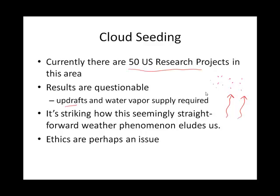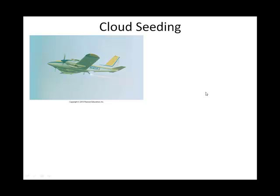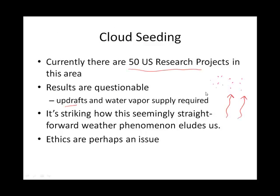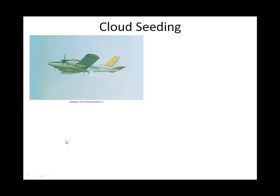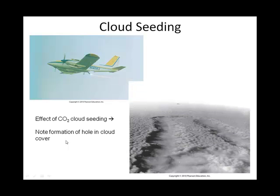Another concern about making it rain here and not there is that there might be some ethical issues. If we make the clouds dump here in the United States, where are the clouds not dumping? Here again is that plane, probably spraying silver iodide.